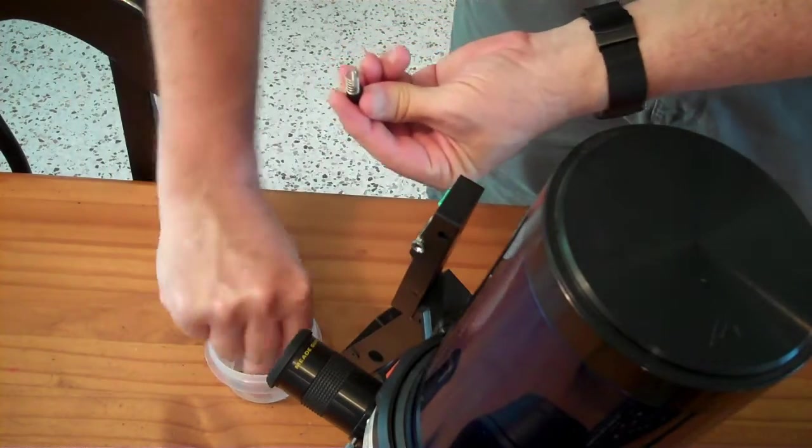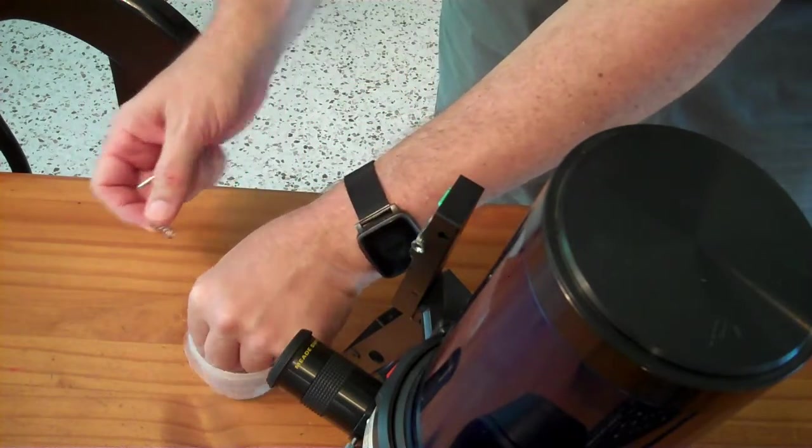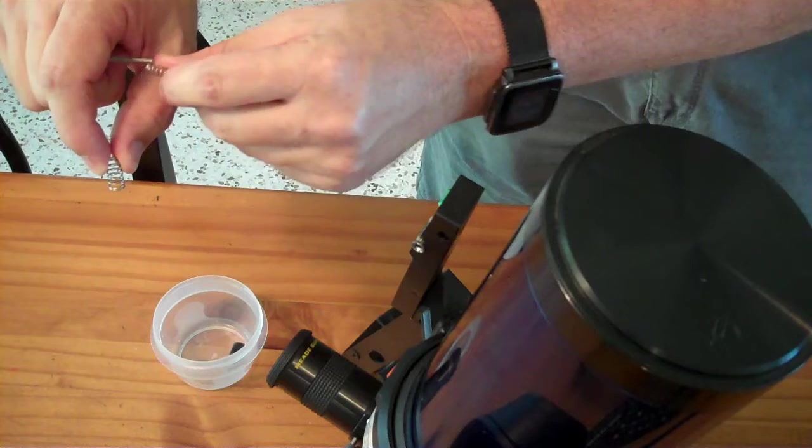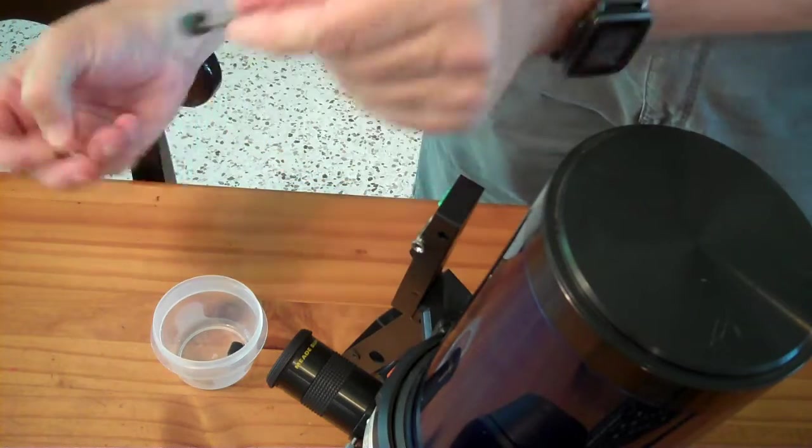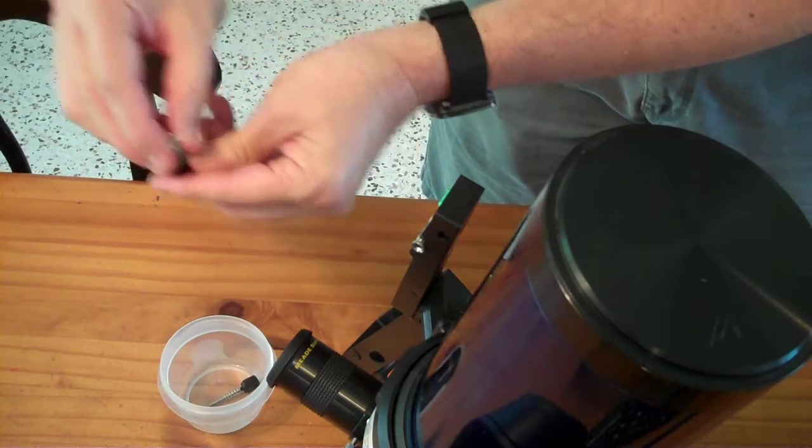And so I just put these springs on the appropriate bolts so I kind of remember which is which. So you know, the small spring goes on the long bolt, which is left and right. And then the big spring goes on the short bolt, which is up and down.